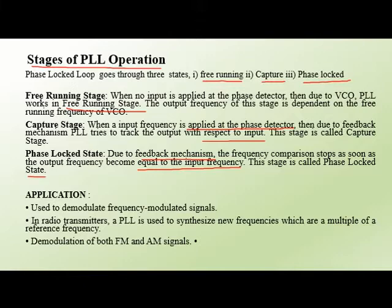The most common applications of PLL include: first, demodulating frequency modulated signals; second, in radio transmitters, the PLL is used to generate a new frequency which is a multiple of the reference frequency; and last, demodulation of both frequency modulation and amplitude modulation signals.